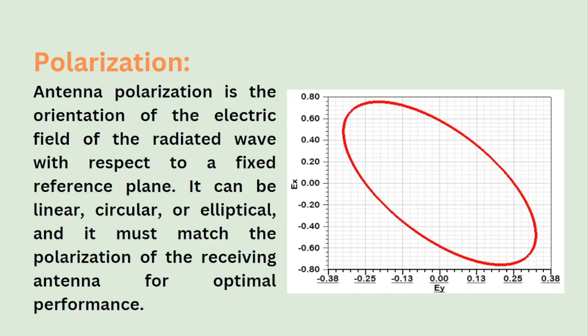Next, the polarization. Antenna polarization is the orientation of the electric field of the radiated wave with respect to a fixed reference plane. It can be either linear, circular, or elliptical, and it must match the polarization of the receiving antenna for optimal performance. If there is a mismatch, the antenna will not receive. If there is a good match with the polarization, then the antennas will communicate with each other.